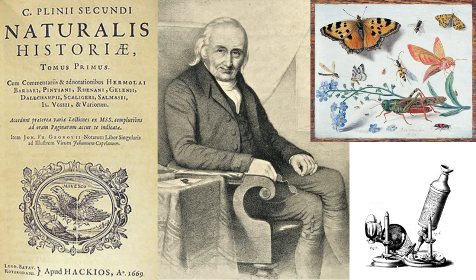Entomology, or the study of insects, is a field of study that is much older than most people can imagine. Here we see the Naturalis Historia, a work by Pliny the Elder — one of the largest single works to have survived from the Roman Empire to the modern day, purporting to cover all ancient knowledge. The work is divided into 37 books organized into 10 volumes, covering topics including astronomy, mathematics, geography, ethnography, anthropology, human physiology, zoology, botany, agriculture, and more.